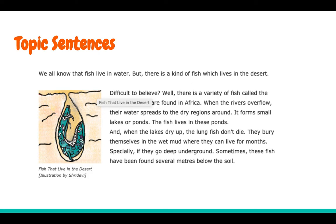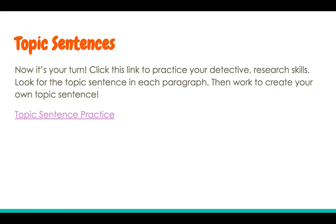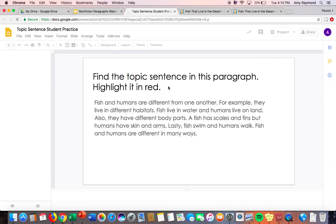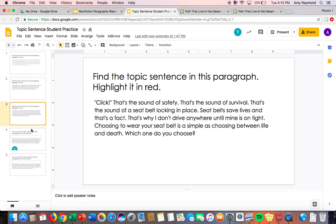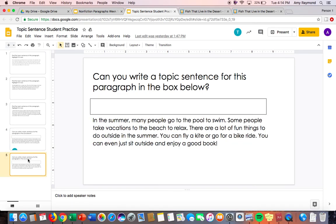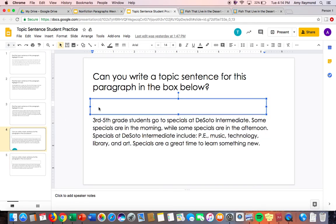So now you are going to try it on your own — it is your turn. What you are going to do is click the link to practice your detective research skills, and you are going to look for the topic sentence of each paragraph. Then work to create your own topic sentence. In this paragraph, you will highlight the topic sentence in red. Same with these two paragraphs. And then for the last two slides — slide 4 and 5 — you will double click inside of the box and type. After reading the paragraph, decide what it is mostly about, and then write a topic sentence for those two paragraphs.